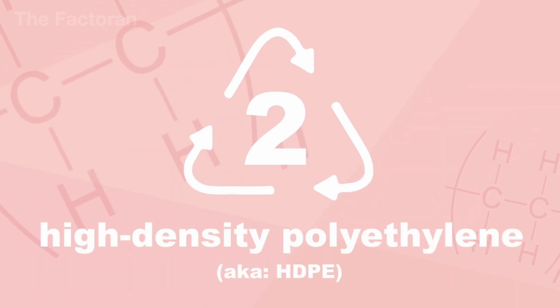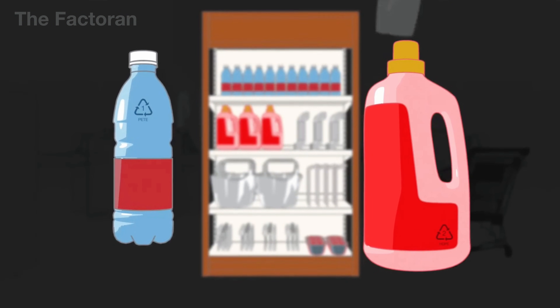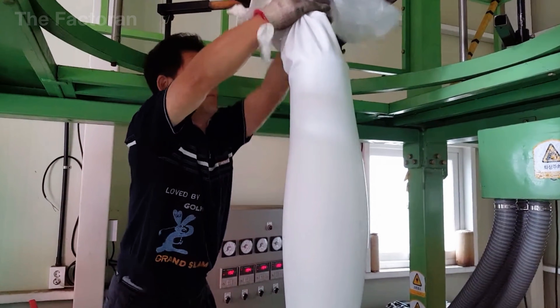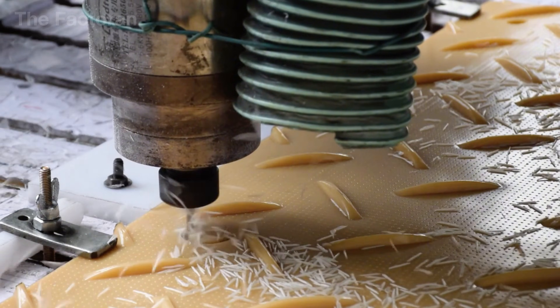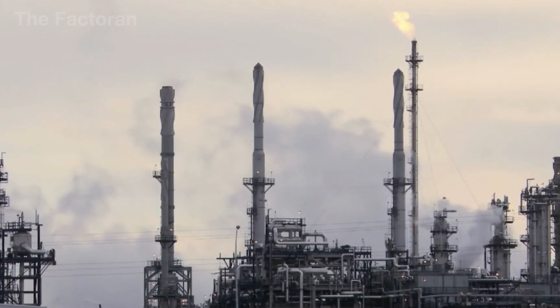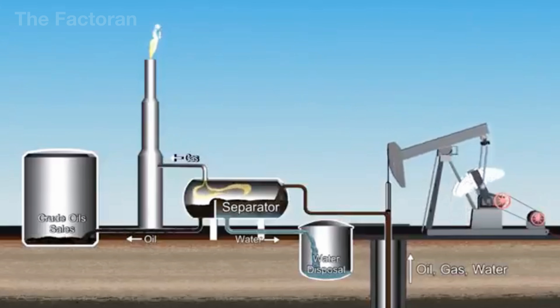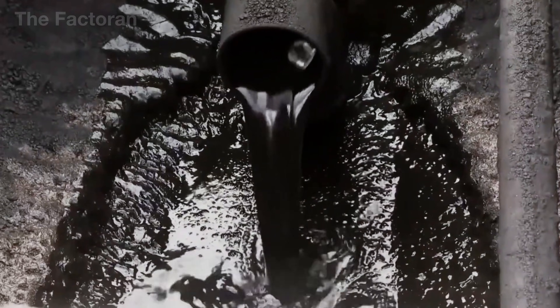HDPE, or High Density Polyethylene, is a thermoplastic polymer with a high molecular density, known for its mechanical strength, chemical resistance, and long service life in infrastructure applications. The production of HDPE begins with ethylene, a light hydrocarbon gas primarily extracted from crude oil or natural gas within large-scale petrochemical complexes. After being generated through the cracking process, ethylene cannot be fed directly into production.